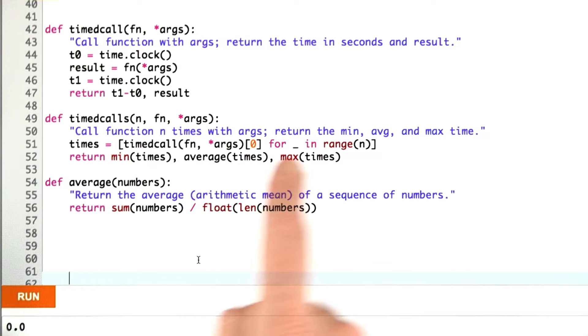And then it returns three values: the minimum of the times, the average of the times, and the maximum of the times. From those, you can do whatever statistical analysis you want to get a better feeling for what the timing is like.